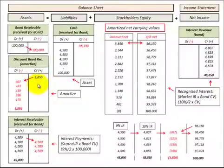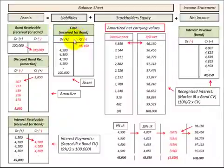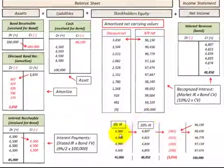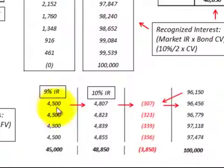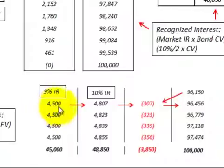Now let's amortize our discount on bonds receivable. Remember that discount on bonds receivable is a balancing account between the bonds receivable and the cash account, and it's also a balancing account between the interest receivable and the interest revenue account. The $4,500 interest payment received each period is based on 4.5% per period times the $100,000 face value of the bond.